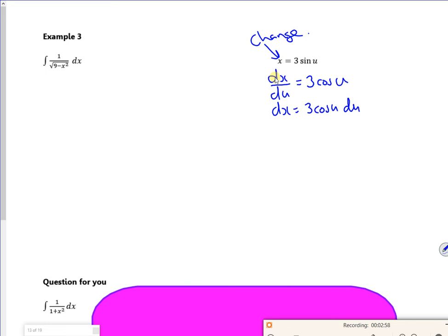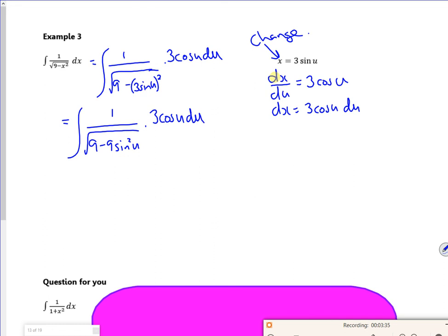I'm going to replace the x with 3sine u, and I'm going to replace the dx with 3cos u du. The 3sine u all squared, so I get 9 minus 9sine squared u, times by 3cos u du.